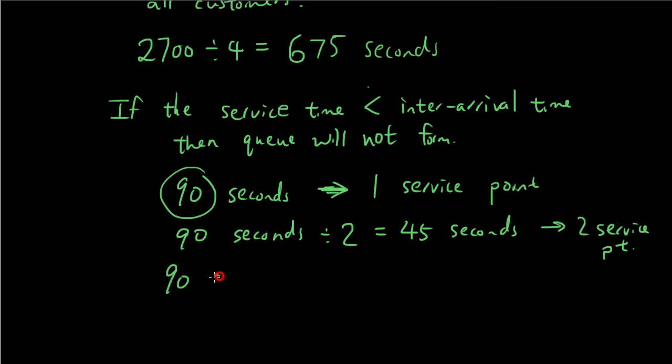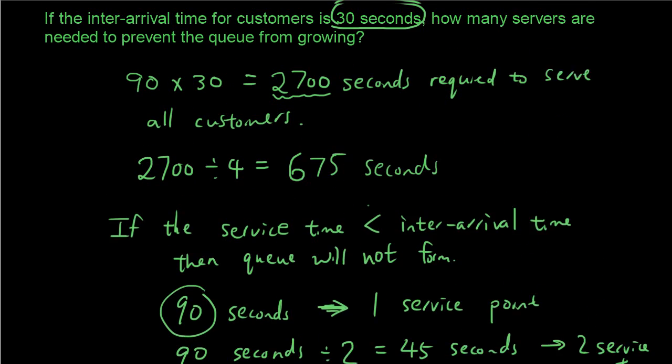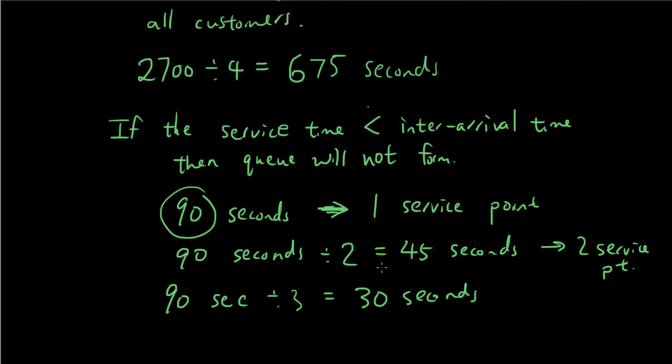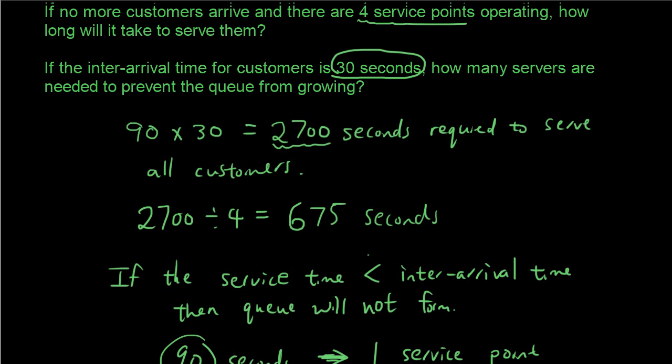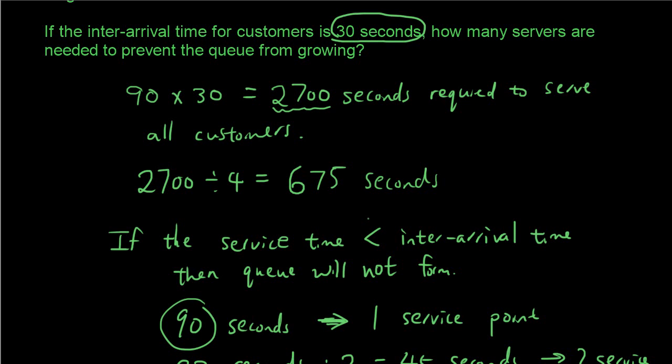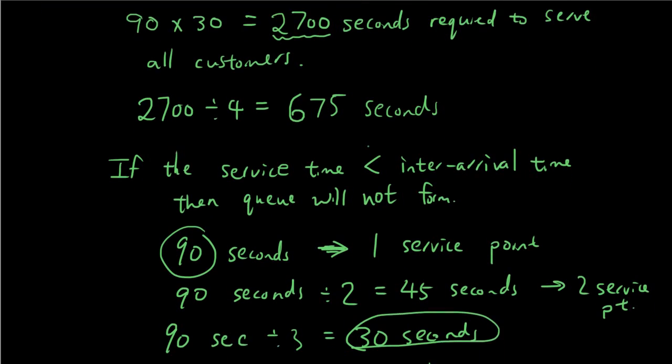When there are three service points, three people serving, you would go 90 divided by 3, which will give you 30 seconds, which is the same as the inter-arrival time. So, the queue will not grow. There will always be the same number of people in the queue if the service time is the same as the inter-arrival time.